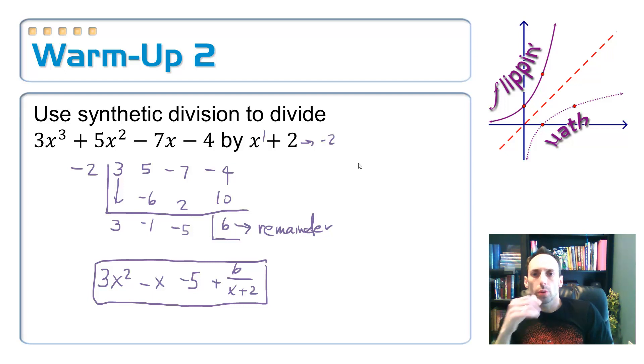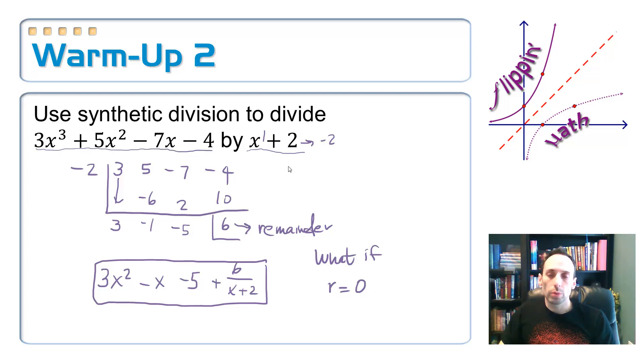So how you write your answer, your quotient, it is 3x squared minus 1x minus 5, and then that last piece is the remainder, plus 6 divided by whatever it was we divided by, which I think was x plus 2. There's the answer. So let me ask you a question, what if the remainder was 0? Well, if the remainder was 0, that meant that the x plus 2, or whatever it was we were dividing by, it went evenly into the dividend. It also meant the x plus 2 would have been a factor. Is x plus 2 a factor of 3x cubed plus 5x squared minus 7x minus 4? No, because the remainder is 6.